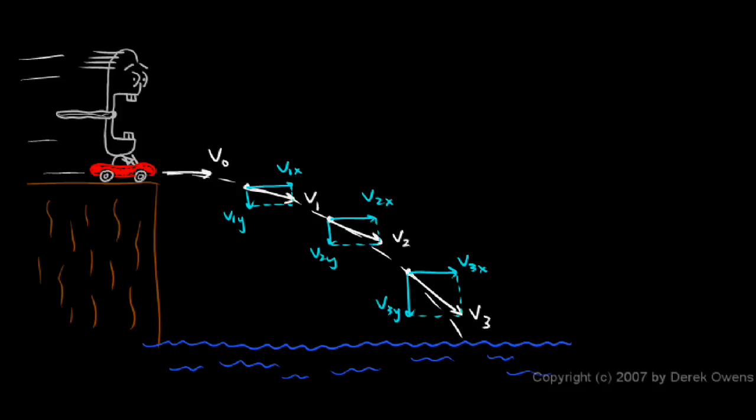The vertical velocity, though, is changing. And if this were drawn accurately, then there would be a steady increase in the length of these velocity vectors pointing down, the vertical components. Gravity pulls it down, so it accelerates down. There's an increase downward in the vertical component of the velocity.